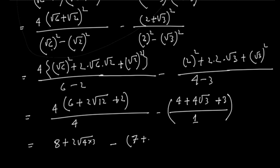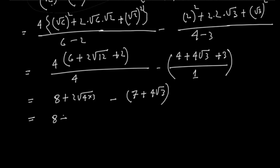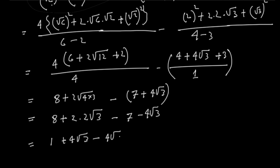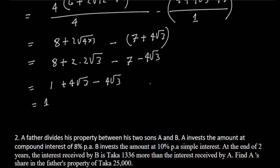Simplifying: 7 plus 4 root 3, then 8 plus 2 into 2 root over 3, giving 4 root over 3 minus 4 root over 3 equal to 1. So the answer is 1.